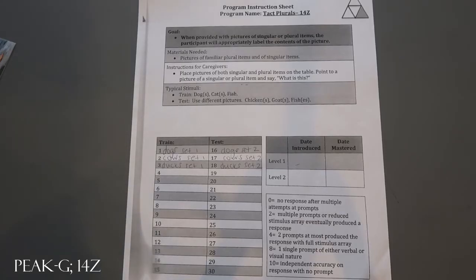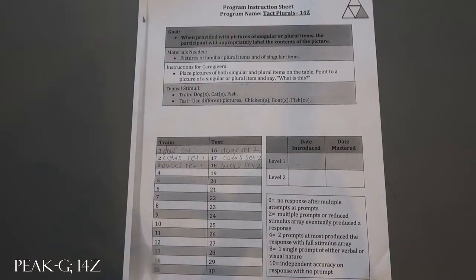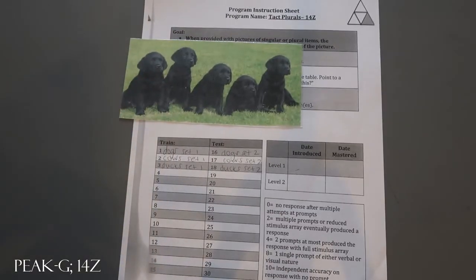This is PEAK Generalization, Tact Plurals 14C. I'm going to show you a quick material sample for this program. It's pretty self-explanatory — we have three different train classes for a set of dogs, cows, and ducks, and a different set for test. The key thing to keep in mind about generalization is you're intermixing train and test together within a block, so some trials you're reinforcing, praising, and prompting, and other trials within the same block you will just be testing — no feedback.